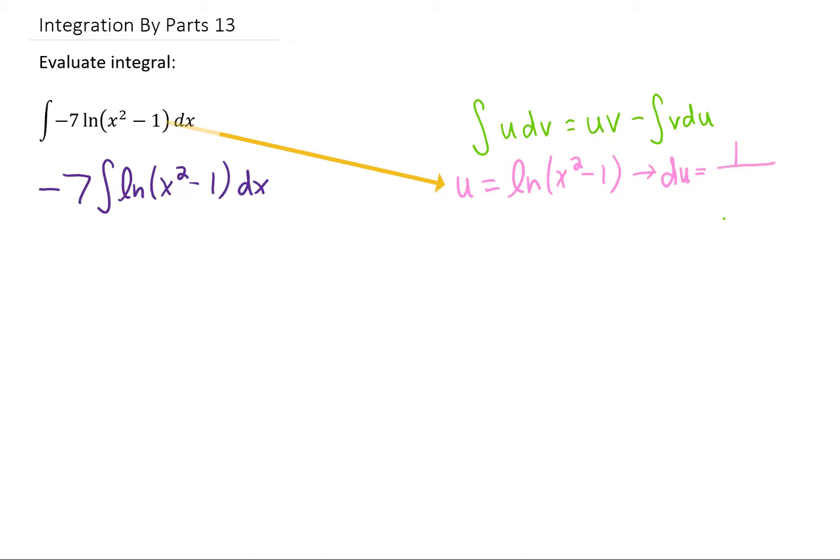Differentiating that gives us 1 over x squared minus 1, and the chain rule says we have to multiply that by 2x. That gives us a du of 2x over x squared minus 1 dx.